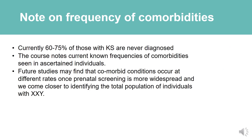Another note on the frequency of comorbidities: currently 60–75% of those with KS are never diagnosed, so the frequencies of comorbidities discussed today are seen in ascertained individuals. Future studies may find that comorbid conditions occur at different rates once prenatal screening is more widespread and we come closer to identifying the total population of individuals with XXY.